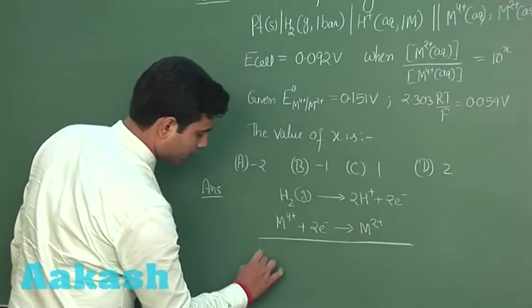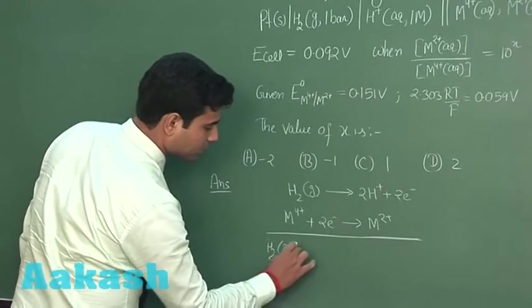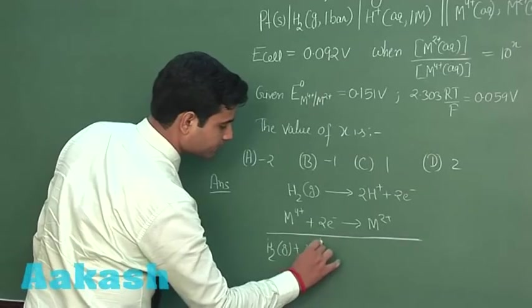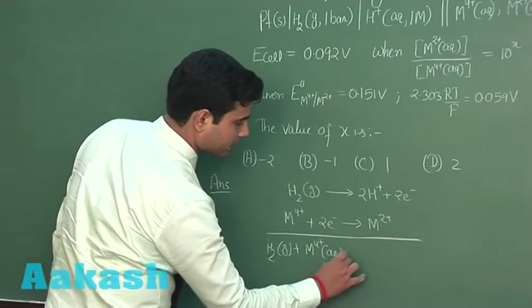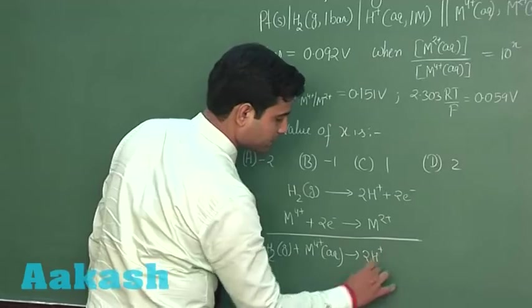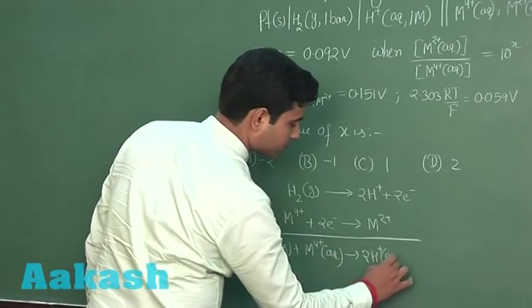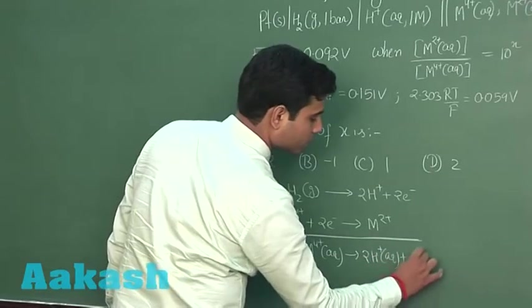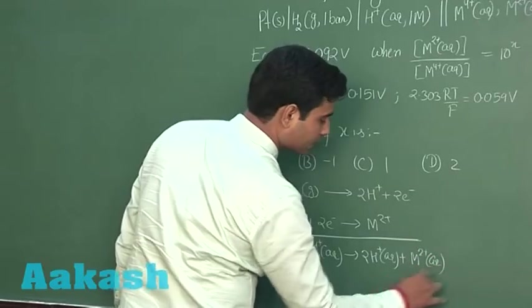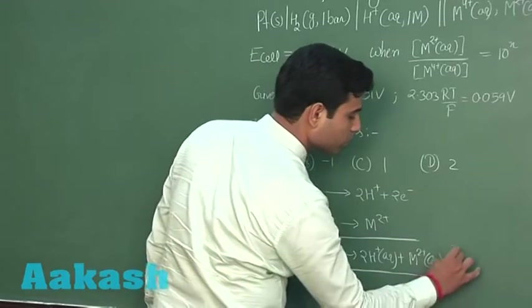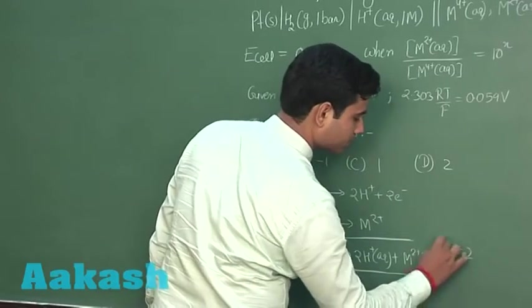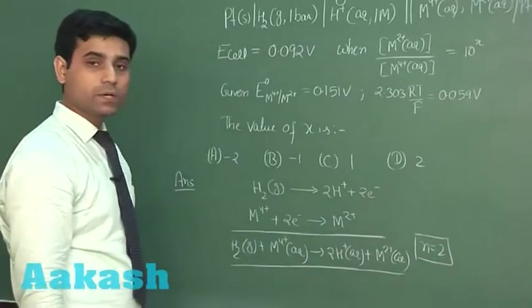The overall reaction will be H2 gas plus M 4 plus aqueous gives us 2 H plus aqueous plus M 2 plus aqueous. Here we can see the value of n is equal to 2. The n will be 2 for this reaction.